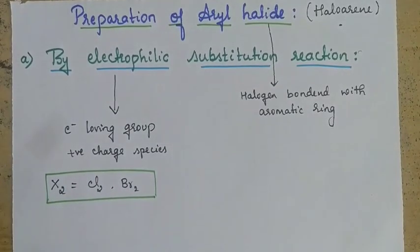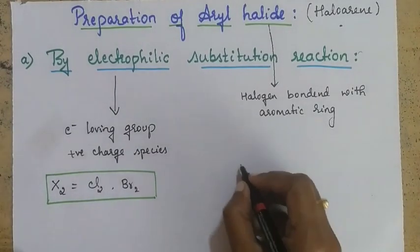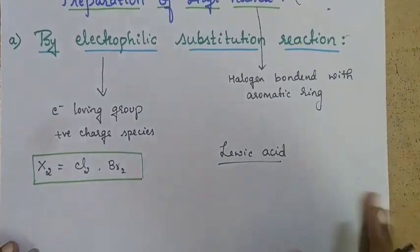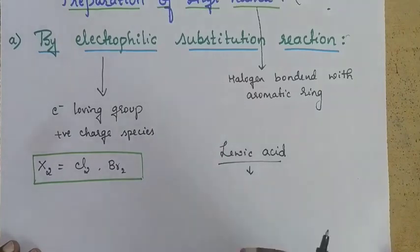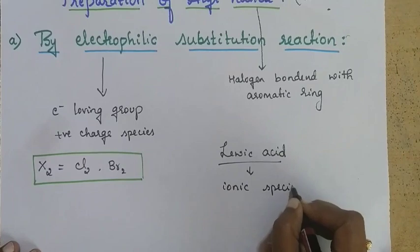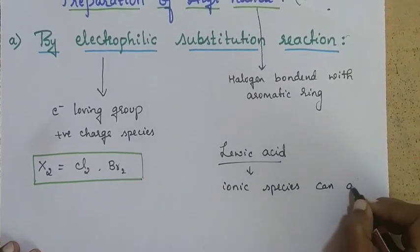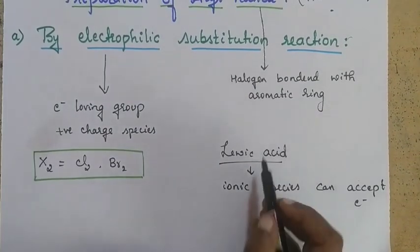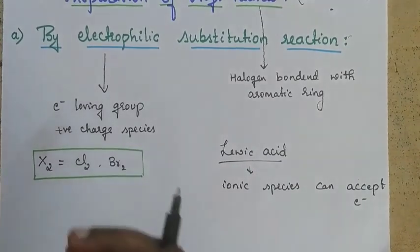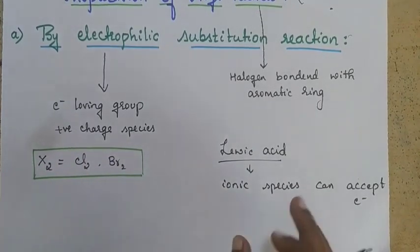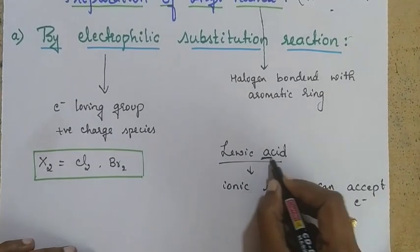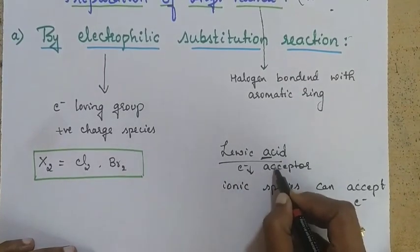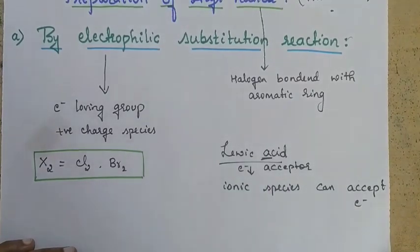I will tell you later why not iodine and fluorine. This reaction takes place in the presence of Lewis acid. Lewis acid means any ionic species which can accept an electron — it is an electron acceptor. You can use one logic to remember: Lewis acid starts with 'A' and acceptor also starts with 'A', so Lewis acid is nothing but an electron acceptor.